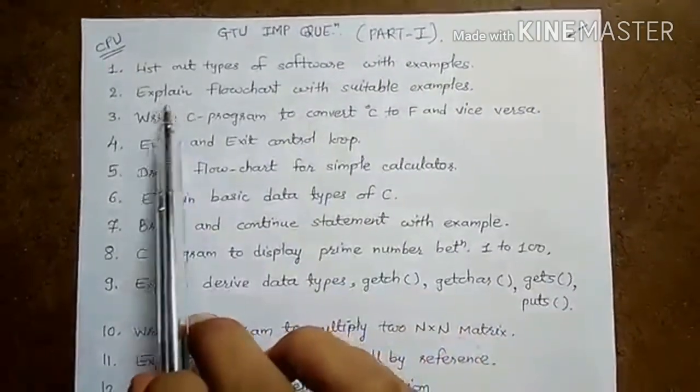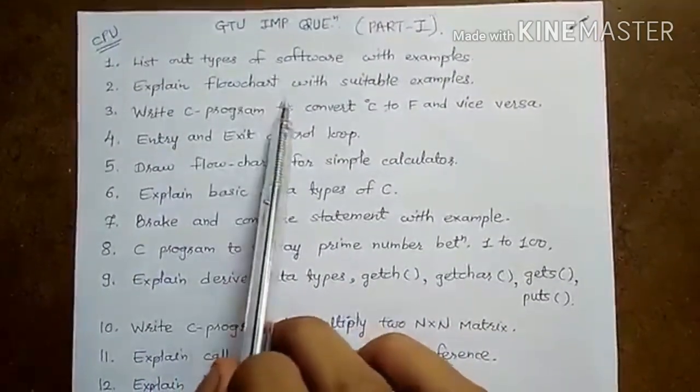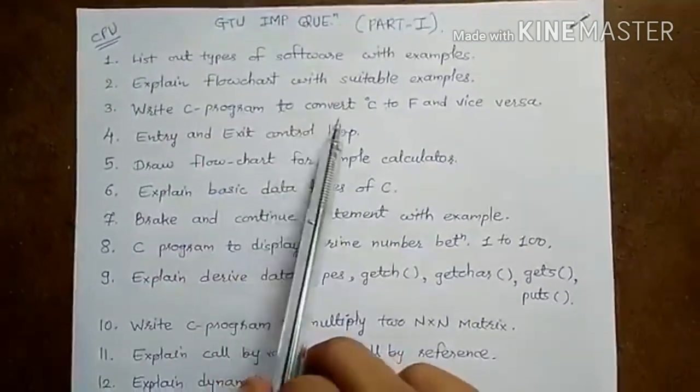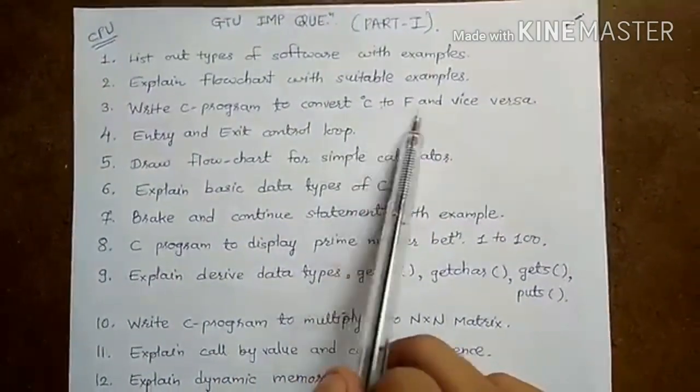Second, explain flowchart with suitable examples. Third, write C program to convert degree Celsius to Fahrenheit and vice versa.